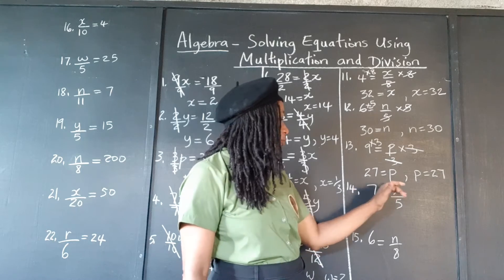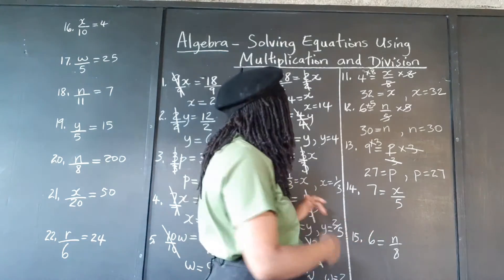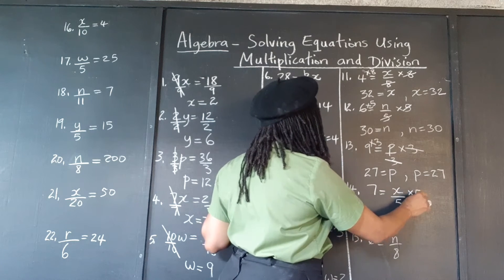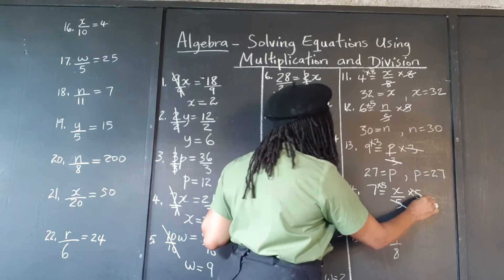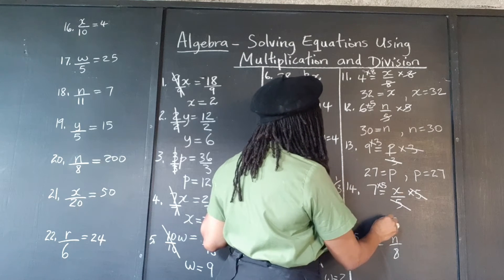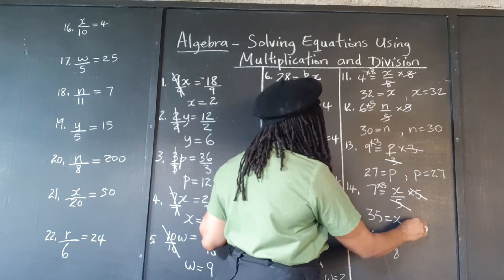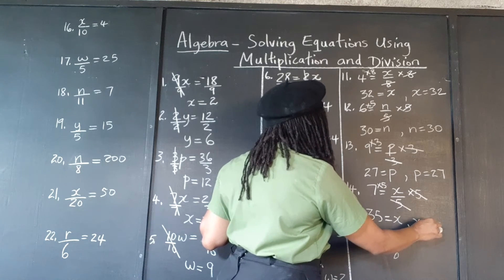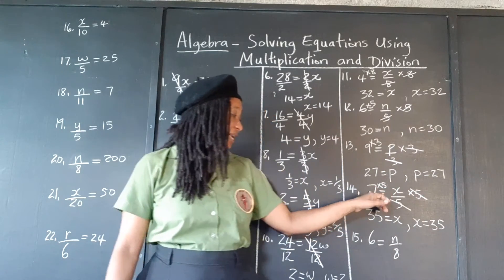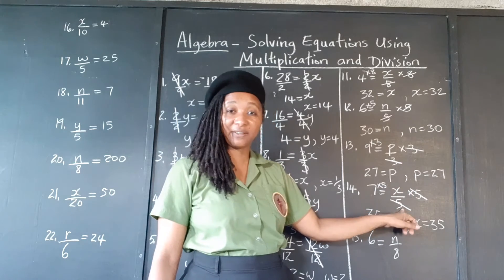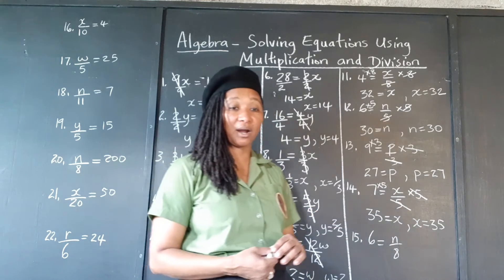7 is equal to which number divided by 5? Same principle — we're going to multiply both sides by 5 so that these 5s cancel out, and we're left with only x. 7 times 5 is 35. Our final answer is x is equal to 35. We can plug it back in: 7 is equal to 35 divided by 5. That is correct, so we know that we are correct.